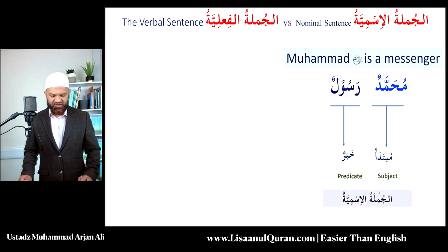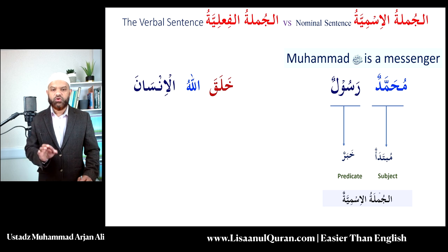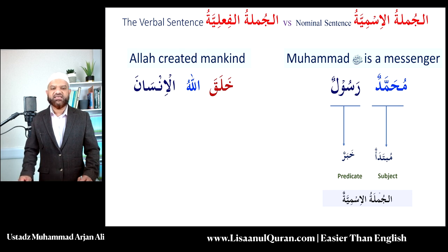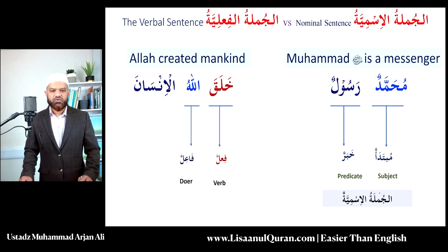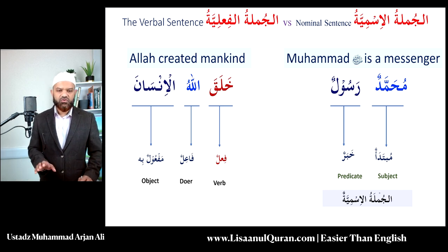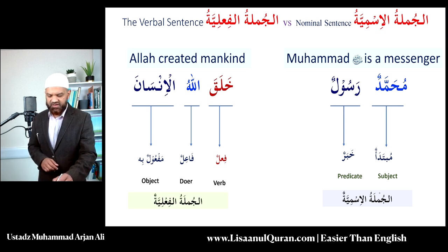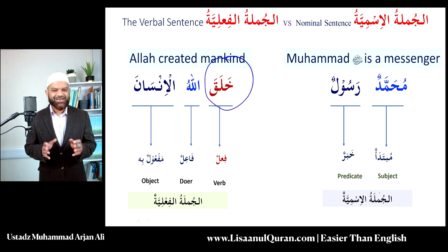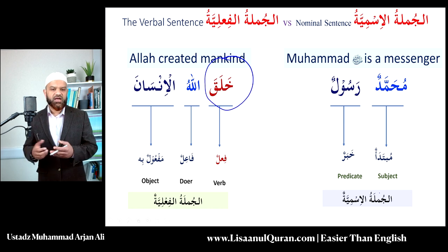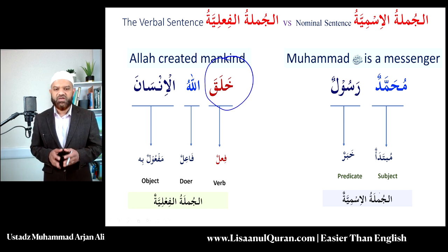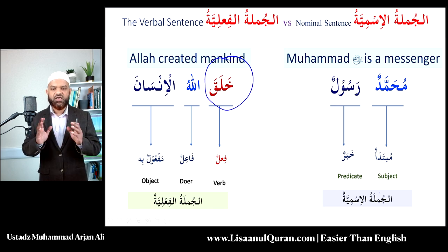Here is an example of a jumlah ismiyyah. In Arabic, we can also begin a sentence with a verb, which we do not normally do in English. For example: 'Khalaqa Allahu al-insana' — Allah created mankind. It has three components: the fi'l, which is your verb; the fa'il, which is your doer; and the object, which is al-insana. This is a jumlah fi'liyyah — it begins with a verb. It has two essential parts: the verb itself and the doer. It may or may not have an object, called maf'ul bihi.